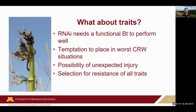RNAi traits are coming to market now. Similar to BT from a resistance management standpoint — it's going to be another individual trait, and if you don't have other traits supporting it, resistance can pop up pretty quickly. You do need those other BT traits in the mix to support the RNAi trait. Our main worry is that it will be tempting to put this trait out there for the worst situations for corn rootworm. We need it, but we need to be careful — putting it in those worst situations is asking for selection pressure for resistance to all those traits.